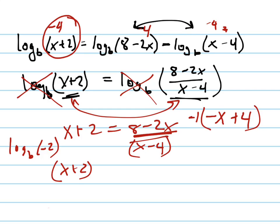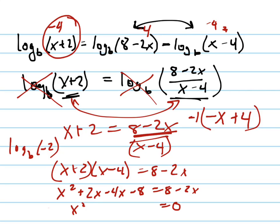So we've got x plus 2 times x minus 4 equals 8 minus 2x. Now this is a quadratic equation, and when I solve it, x squared plus 2x minus 4x minus 8 equals 8 minus 2x. So let's move everything over. Let's set it equal to 0, so we can factor it or use the quadratic formula.